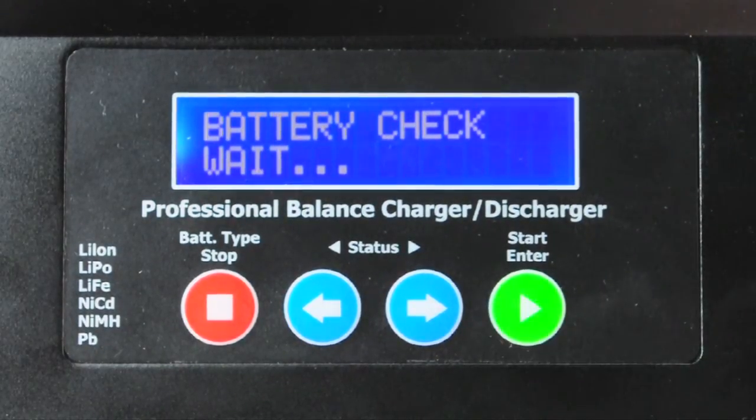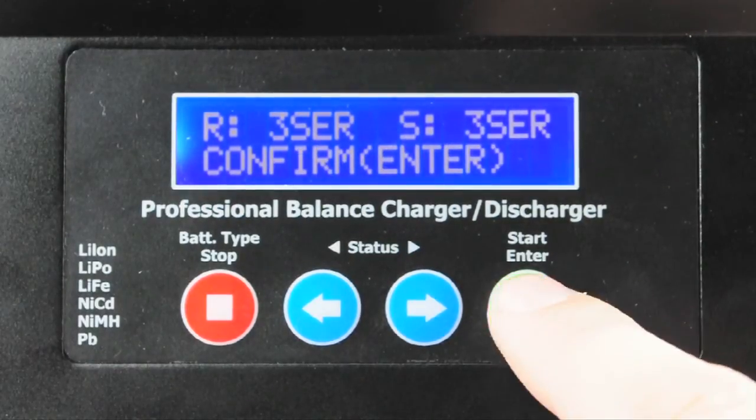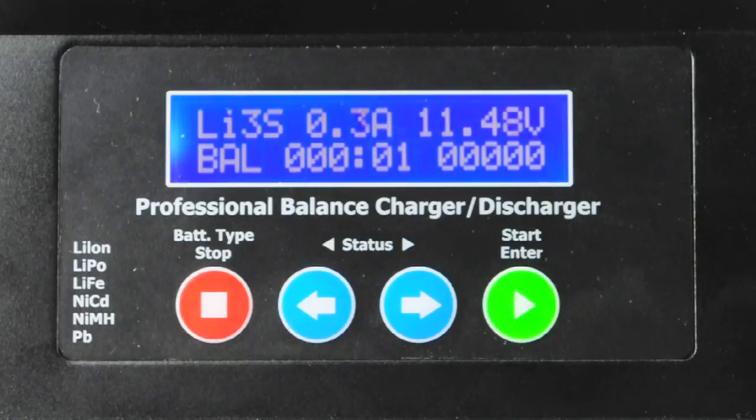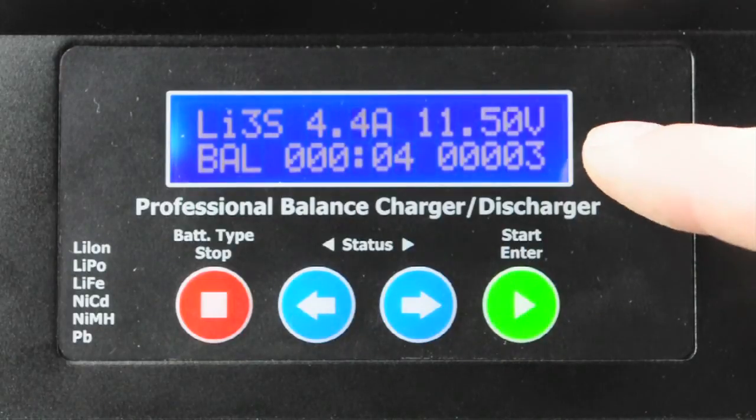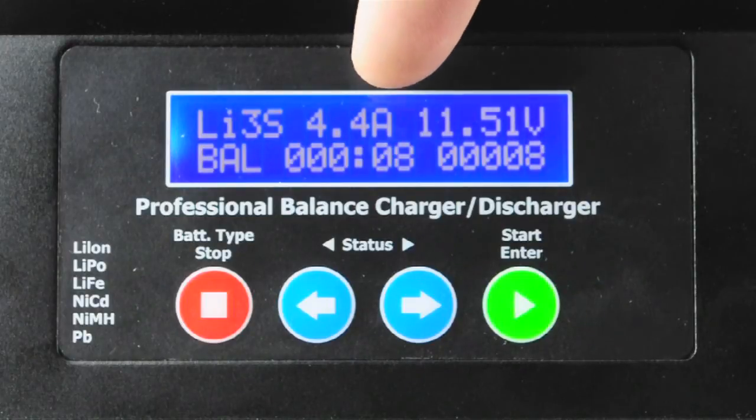Once your charger is dialed in with proper settings, hold the green start button and the charger will ask you to confirm the amount of cells it reads compared to the amount of cells you asked it to charge. If these numbers match up, hit the green button and the charge will begin.